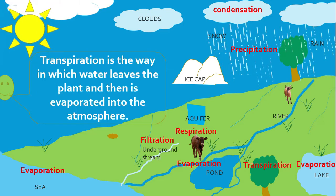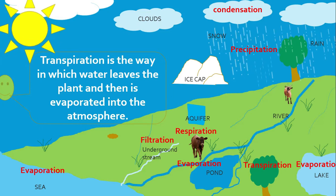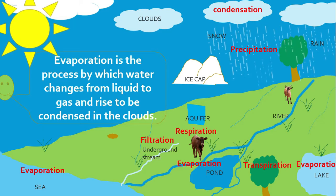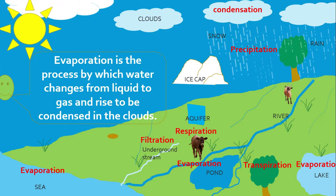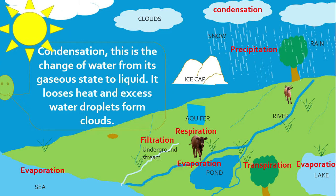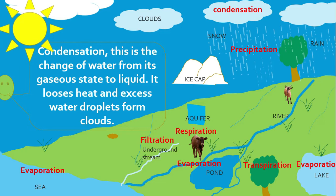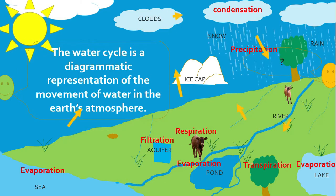Transpiration is the way in which water leaves a plant and then is evaporated into the atmosphere. Evaporation is a process by which water changes from liquid to gas and rises to be condensed in clouds. Condensation is the change of water from its gaseous state to liquid — it loses heat and excess water droplets form clouds.